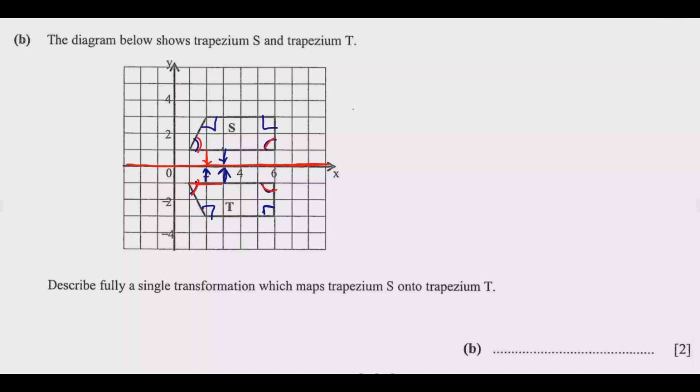In that case, we know it's reflection. If it's reflection, we need to describe it using two things. We say reflection, then what's the next thing? The mirror line. The mirror line completes the description for us to describe this fully. So we know that it is a reflection.